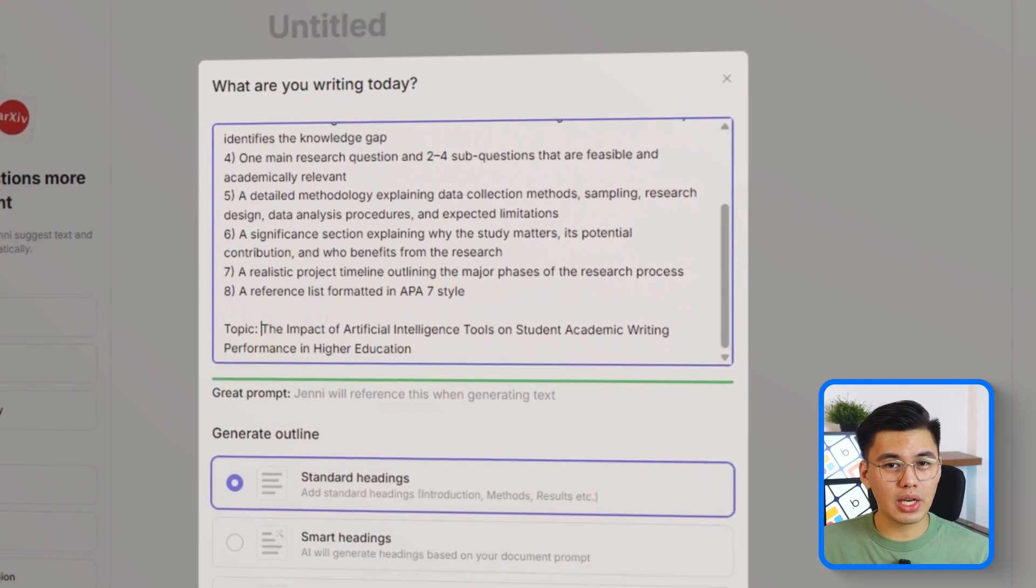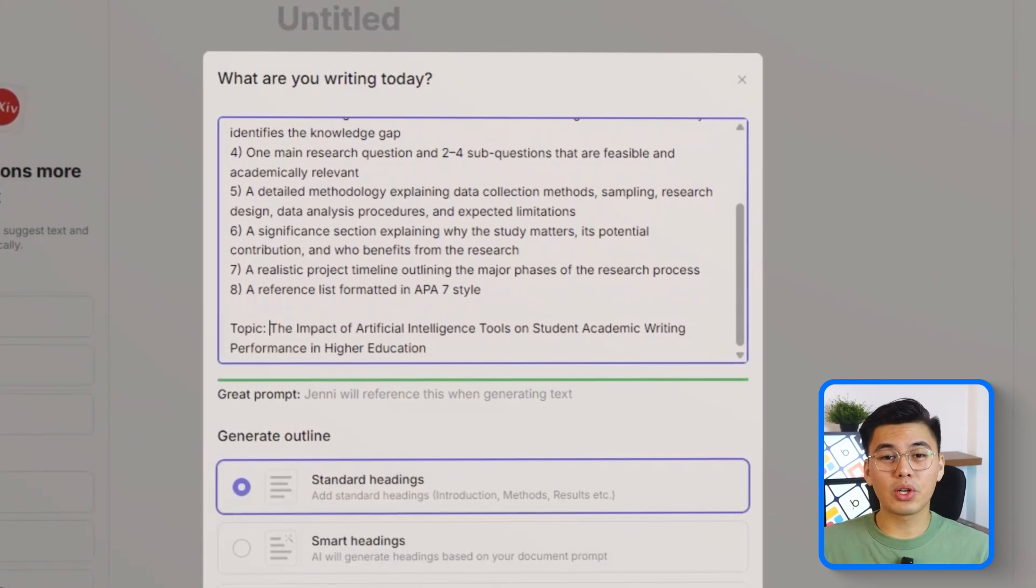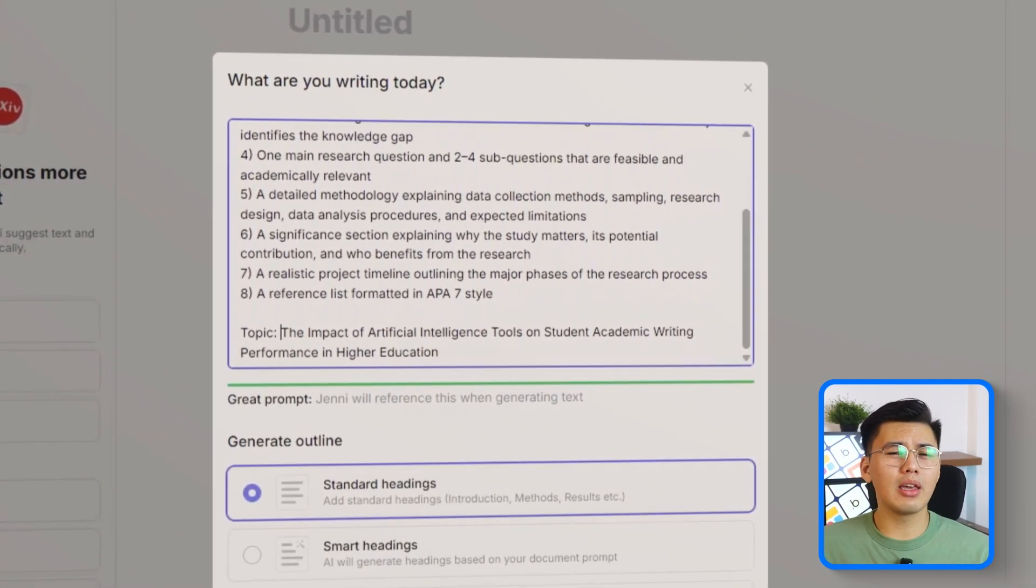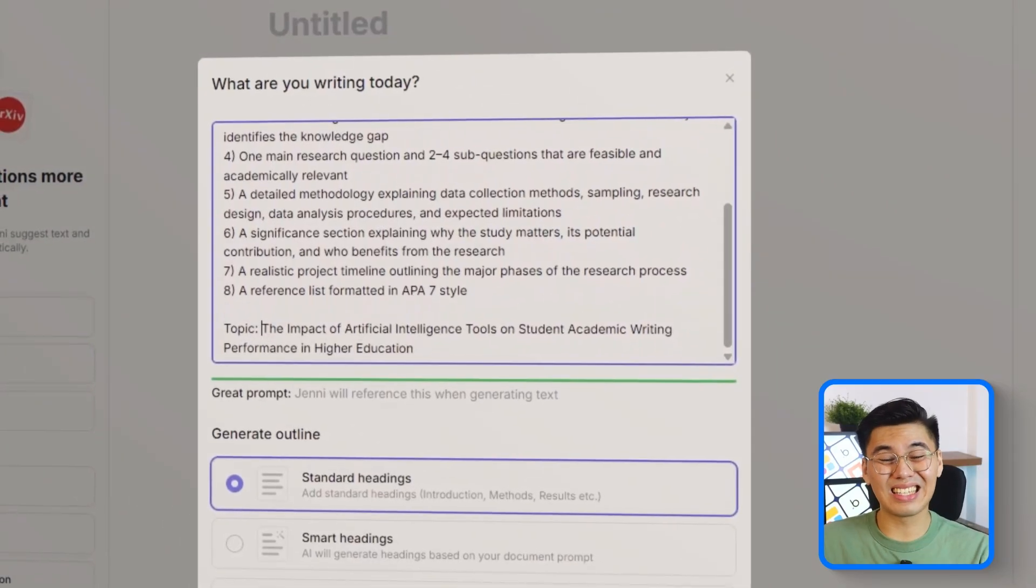This prompt includes everything Jenny needs to generate a full research proposal from start to finish. It covers all eight required sections: a strong, keyword-rich title, a clear 100-word abstract, a background section grounded in existing literature,